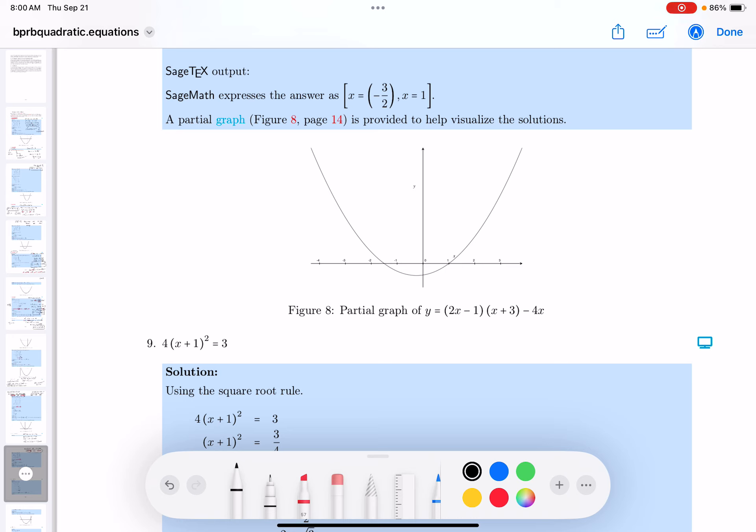I'm just looking at it. I think it's a square root rule, and I'll put this one down. I'm going to say (x + 1) squared. I'm going to divide both sides by 4, and you get 3/4.